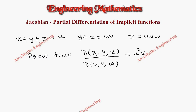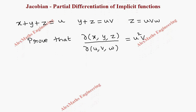Hi students, this is Alex. In this video we are going to prove ∂(x,y,z)/∂(u,v,w) = u²v. First of all, we need x, y, z in terms of u, v, and w. We take three equations: x + y + z = u, y + z = uv, and z = uvw.